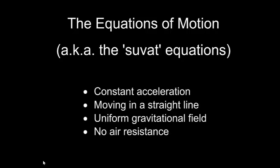These are the situations in which you can use the equations of motion. You must have constant acceleration in a straight line, the gravitational field must be uniform, which we can assume to be true for almost anything on the earth, and we always assume that there is no air resistance.